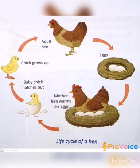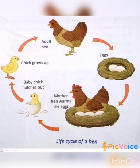Then the mother hen sits on the eggs to keep them warm. Then the baby chick hatches out and grows up to become an adult hen again. The life cycle order is: adult hen → eggs → mother hen warms the eggs → baby chick hatches → chick grows up → adult hen. Draw the diagram neatly and study the questions. The remaining questions will be discussed in the next class. Thank you.